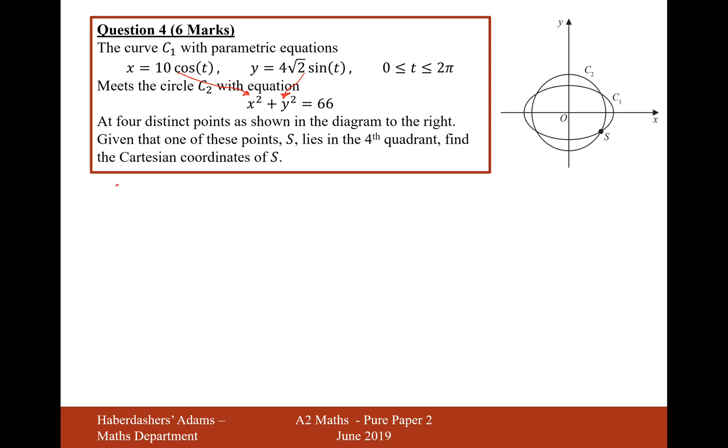So it's going to be 10 cos t squared plus 4 root 2 sine t squared equals 66. Now, why did I decide to do this? Well, because what you're looking to do is find the intersection of two graphs.